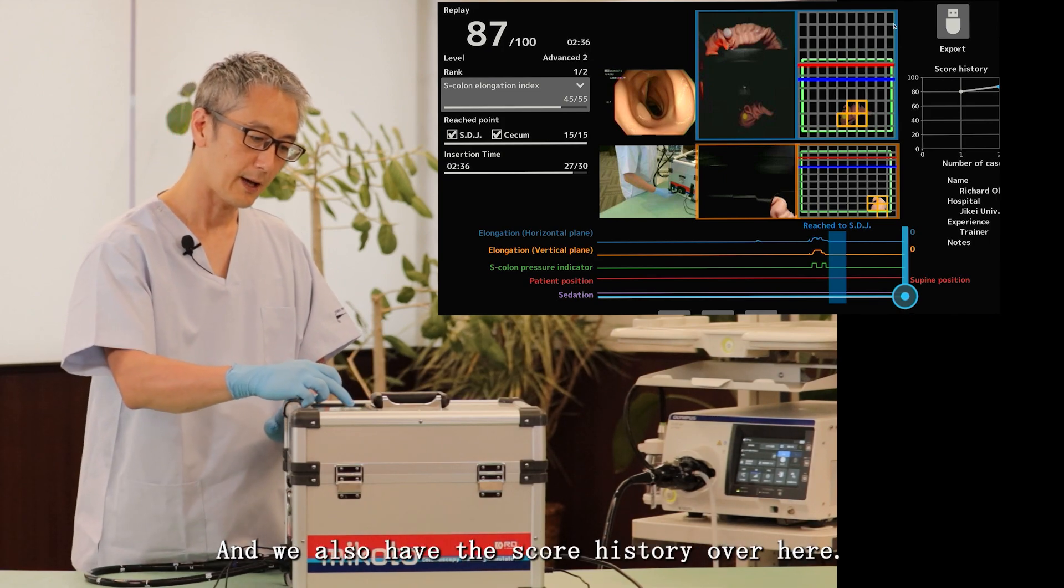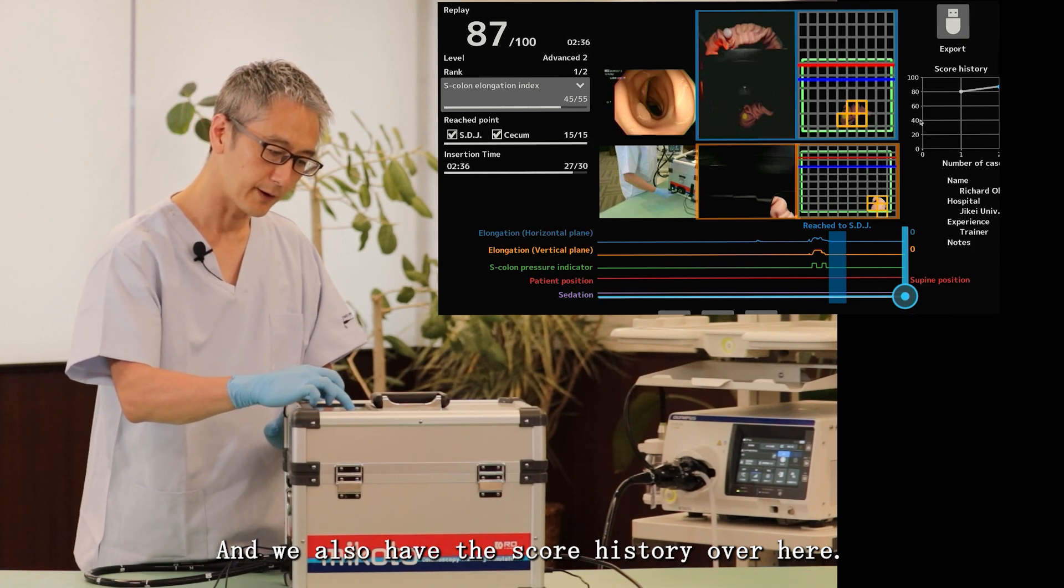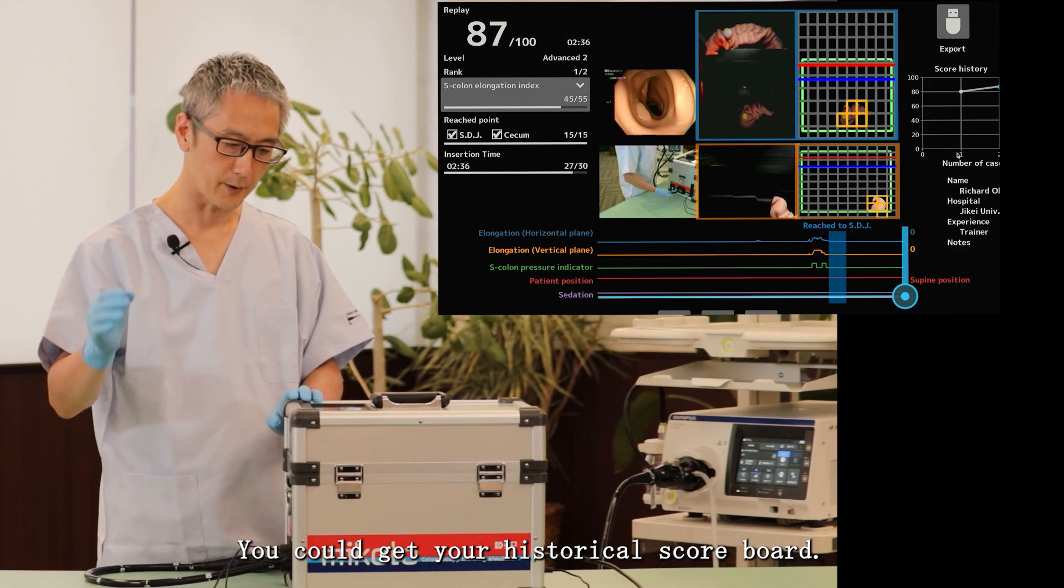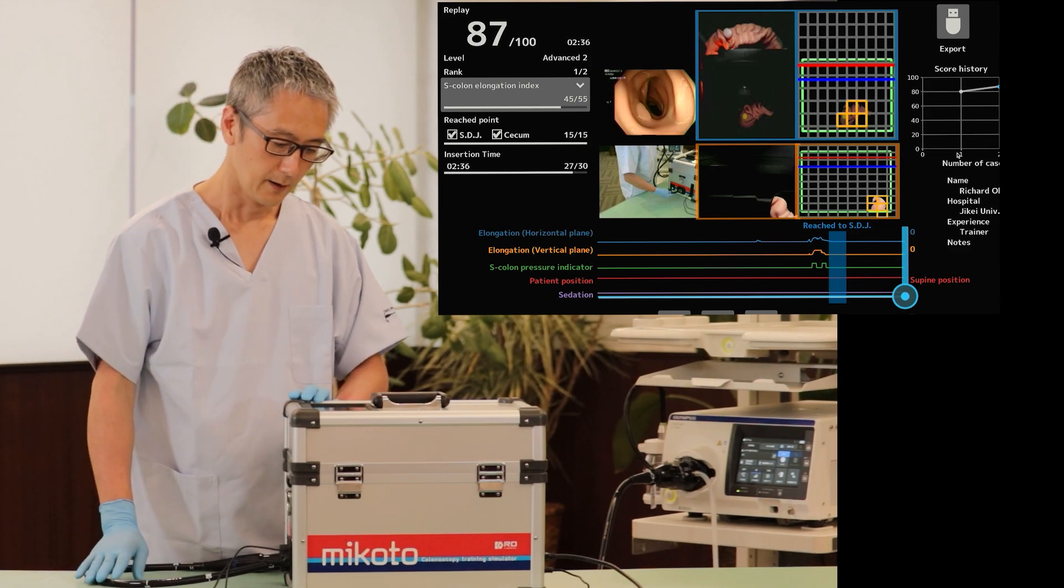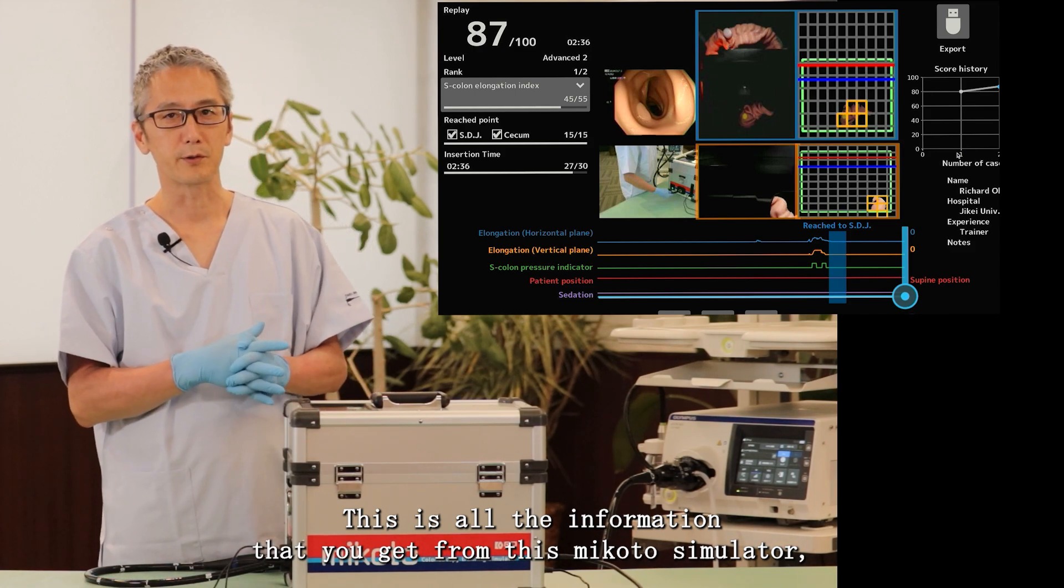And we also have the score history marked over here. As you can see, you could get your historical scoreboard. This is all the information that you get from this Mikoto simulator, which can be used for very sufficient self-training.